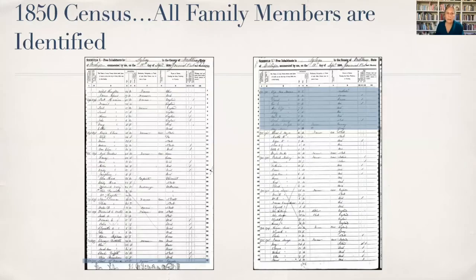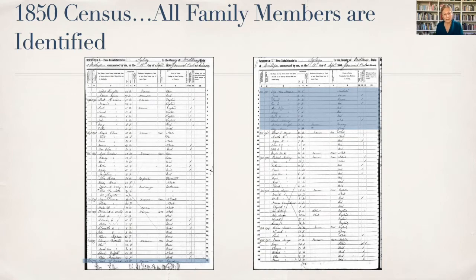In 1850, it got a little easier. They started to identify the actual members of the family. You can see Samuel Monroe at the bottom of the first page. Notice that they separate families — so if you find a page, go to the page before and the page after, because some members of your family might be on another page. Here you see the names and ages and where this family was born. Those little marks in the column on the right are education — those kids are still in school. It gets a little easier in 1850.